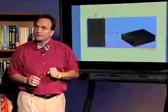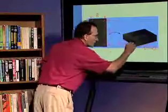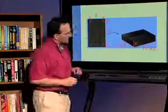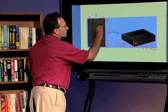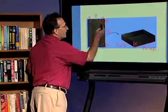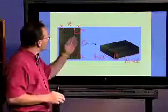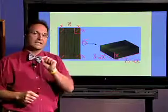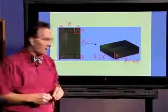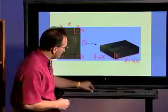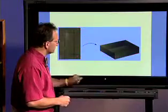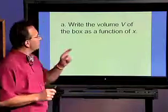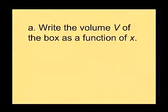What about the height of the box? The height of the box, of course, is this, which is the amount x that we've cut out. And so we could see that here, that when we fold it up, the height would be equal to x. So now what we can do is actually calculate the volume of the box. So let me do that here. We want to write the volume as a function of x, which is, again, the height.